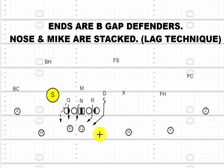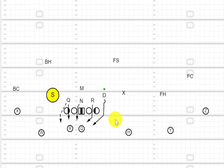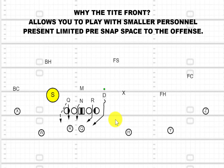Usually in a tight front I like to bring one of the two edge defenders — here we have our dollar blitzing off the edge — to create that fourth rusher in a pass rush. The dollar allows you to play with three defensive linemen on the field if your linebacker group or DB group is deeper than your defensive line group, or maybe you have some injuries in the front. It's a way for you to play out of a 30 personnel or four-linebacker, three-down-lineman personnel.